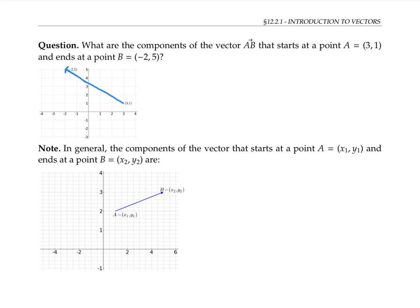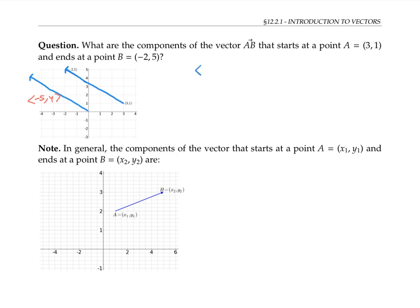Please pause the video to find the components of the vector that starts at the point (3, 1) and ends at the point (−2, 5). By moving the vector so it starts at the origin, we can see it extends negative five in the x direction and four in the y direction, so its components are ⟨−5, 4⟩. In fact, we could have predicted this: the difference in x coordinates (−2 minus 3) and the difference in y coordinates (5 minus 1) give us the components directly.